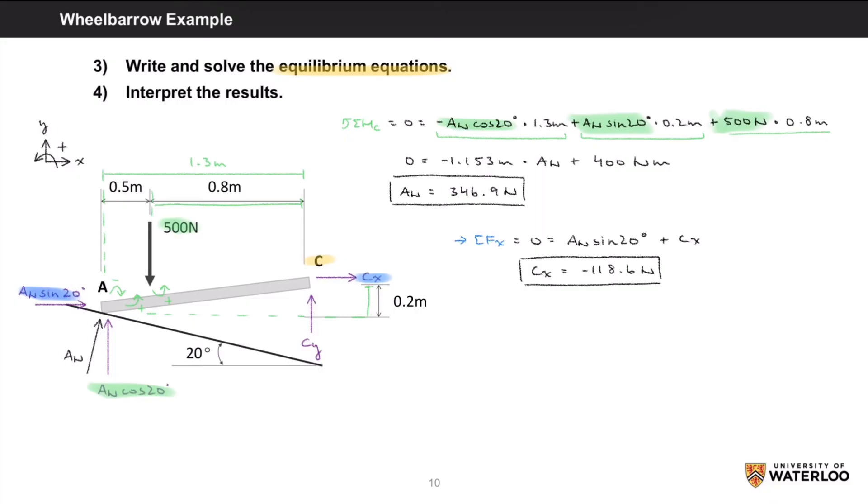Finally, calculating the sum of forces in the vertical direction, the sum of Fy equals zero will account for AN times cosine of 20 degrees, the 500 newton force, and Cy. Our equation will be zero equals AN times cosine of 20 degrees minus 500 newtons plus Cy. Rearranging the equation for Cy, we will get a value of 174.0 newtons.